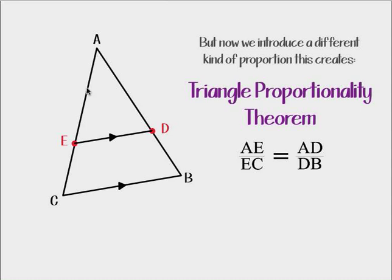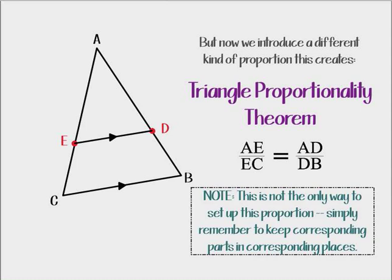Notice that on one side, I put the longer section over the smaller section, and on the other side of my proportion, I also put the ratio the longer side over the shorter side. This is not the only way to write this proportion. There's actually eight different ways that I can write that proportion. This is only one of them, but we need to remember to keep corresponding parts in corresponding places. If I put long over short, then on the other side, the other ratio also needs to be long over short. If I put short over long, the other side needs to be short over long, and so on.